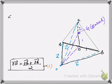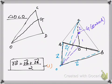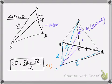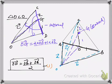Next, we consider triangle OCD. In triangle OCD we have point G, which divides the line segment CD in the ratio 2:1. Applying the section formula for internal division, vector OG equals 2 times vector OD plus 1 times vector OC, all divided by 2 plus 1, which equals 3. This is our second equation.